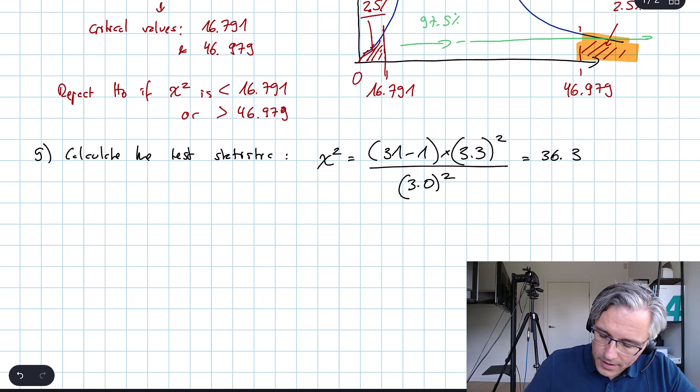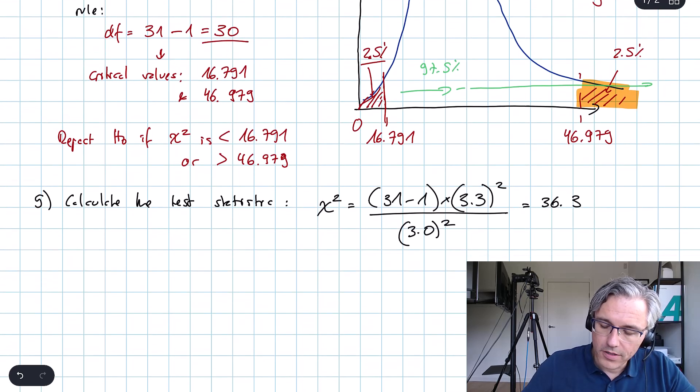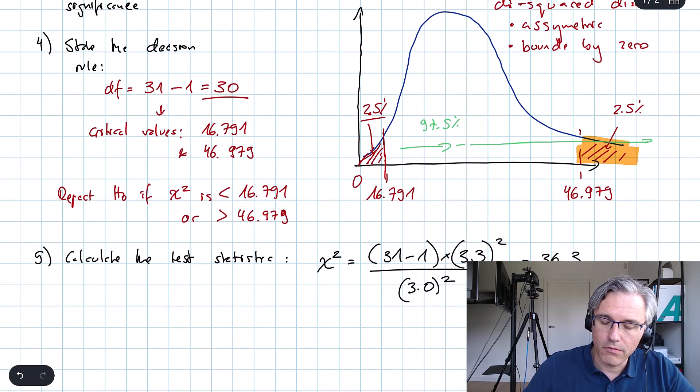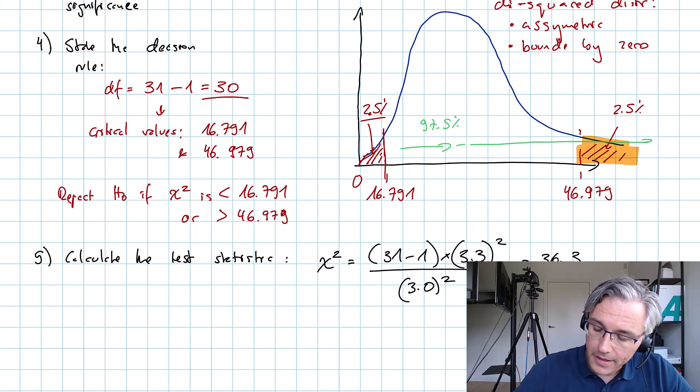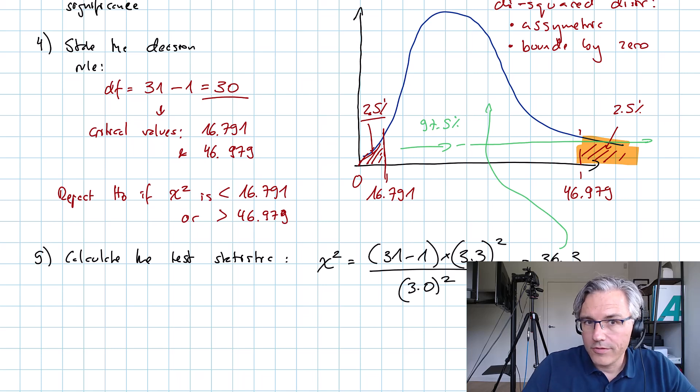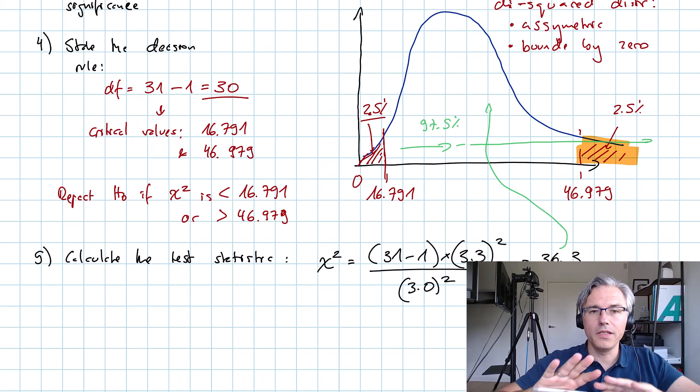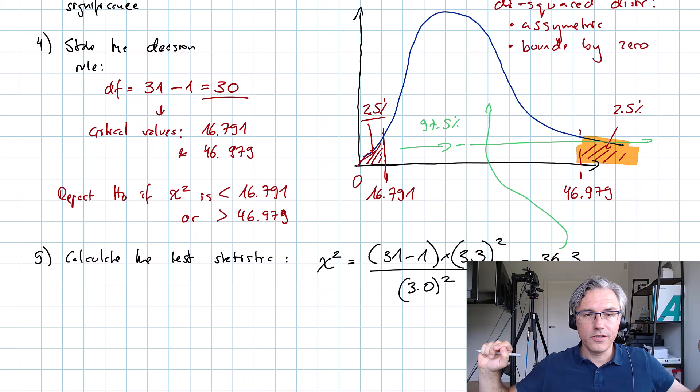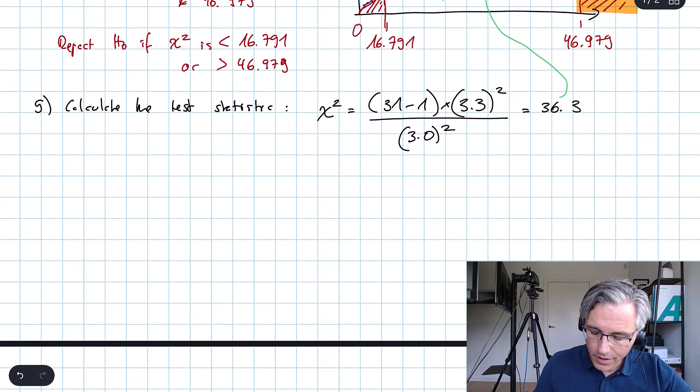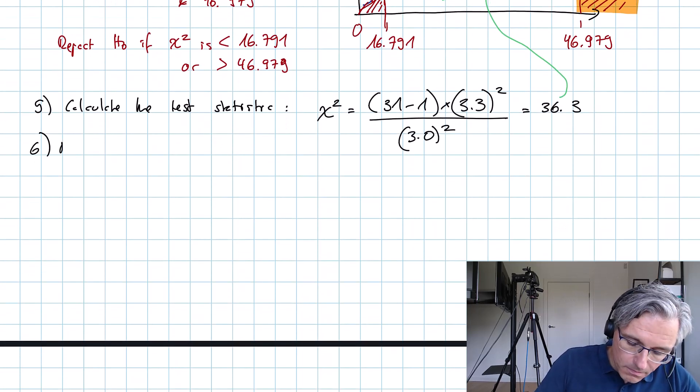Please appreciate where that 36.3 is in terms of our depiction of the chi-square distribution. It's somewhere between those two critical values. So, it's in the territory where we actually fail to reject. We would be rejecting H0, the null hypothesis, if we crossed out of those boundaries, exceeded the boundaries, but we haven't.